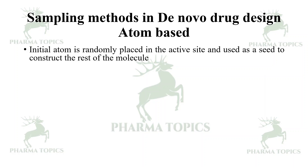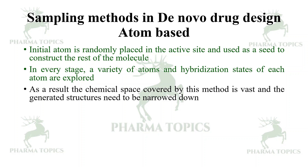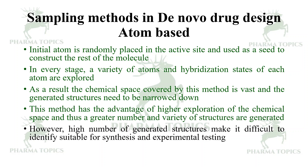In atom-based sampling, an initial atom is randomly placed in the active site and used as a seed to construct the rest of the molecule. At every stage, a variety of atoms and hybridization states are explored, making the chemical space covered by this method vast. The generated structures need to be narrowed down; this method has the advantage of higher exploration of chemical space and greater variety of structures, but the high number of generated structures makes it difficult to identify suitable compounds for synthesis and experimental testing.